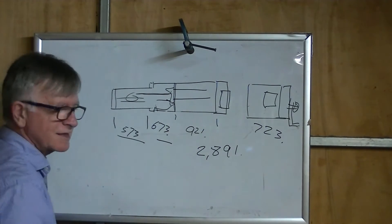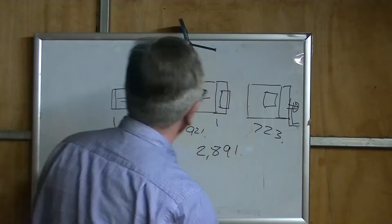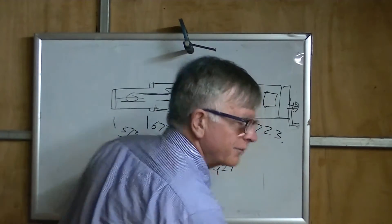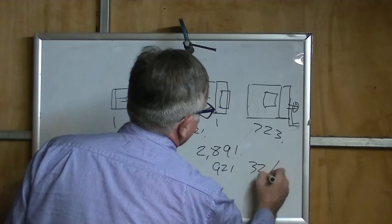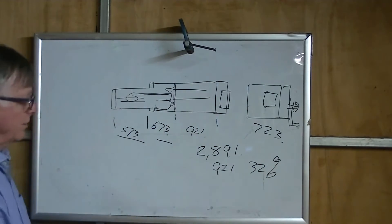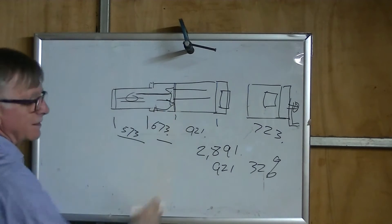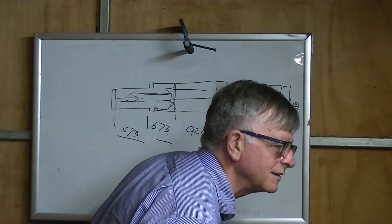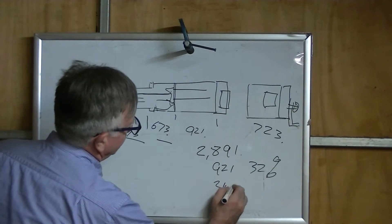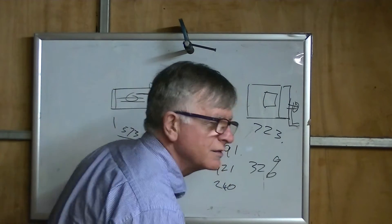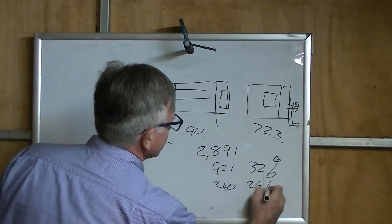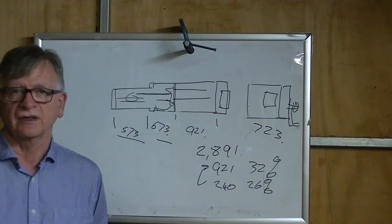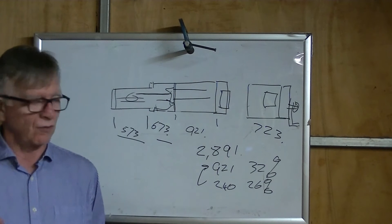Now the ballast tank itself is, as I've said, 921, which is 32% of the whole thing. The piston sitting in there has a volume of 240, which is 26% of the volume of the ballast tank. So that gives you a picture roughly of how all of this works.